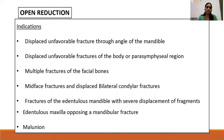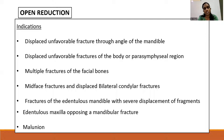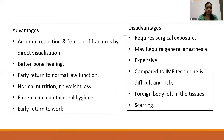In the edentulous maxilla, we cannot get occlusion to put the maxilla and mandible into intermaxillary fixation, so open reduction is indicated. In malunion cases, when closed reduction has already been tried and has failed, we can go for open reduction.